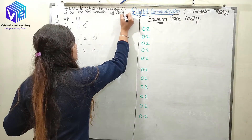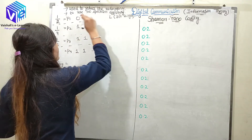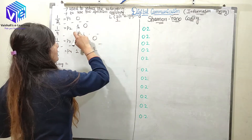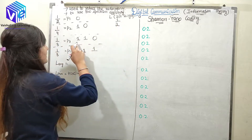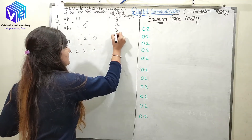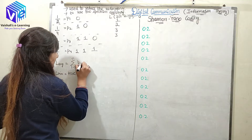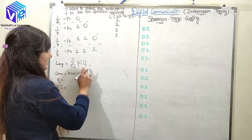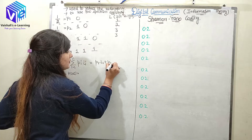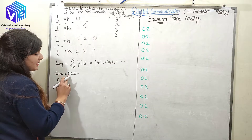We can now calculate various parameters. The bit length L: for P1 the code is '0' so L1 = 1; for P2 the code is '10' so L2 = 2; for P3 the code is '110' so L3 = 3; for P4 the code is '111' so L4 = 3. The average length L_avg is given by the summation of P_i × L_i for i = 1 to N, i.e., P1·L1 + P2·L2 + … up to n.